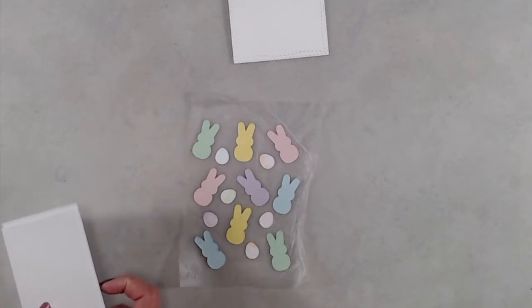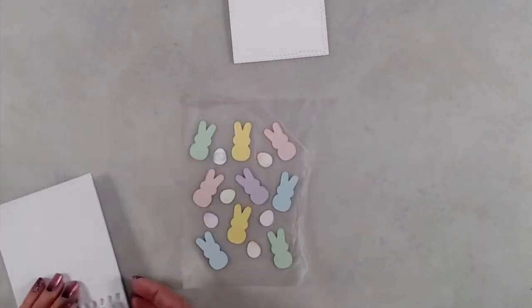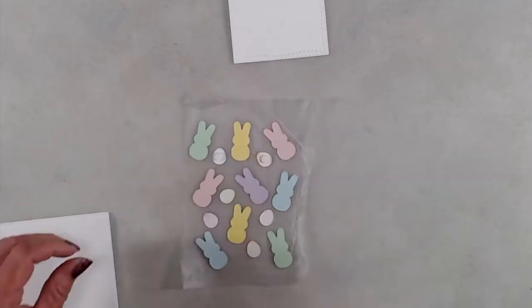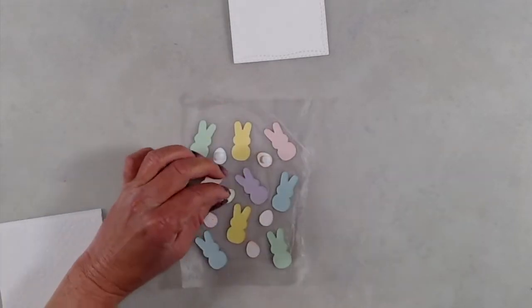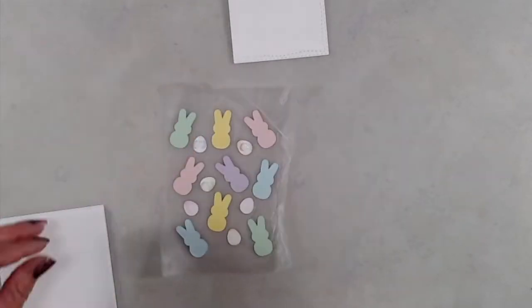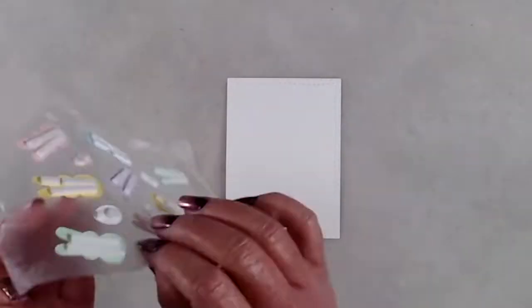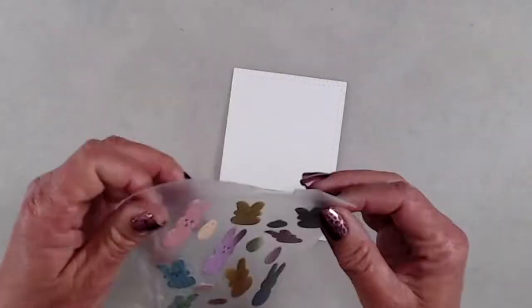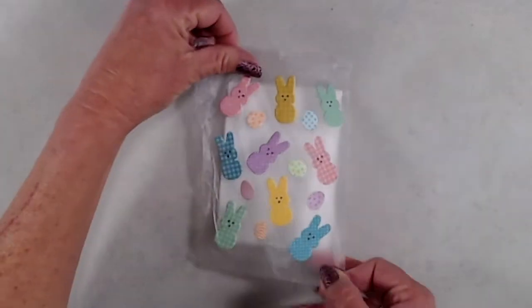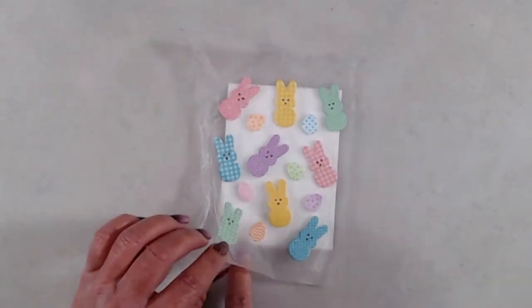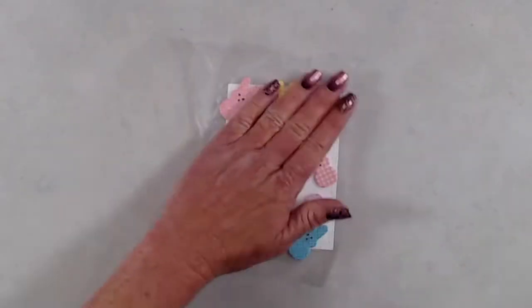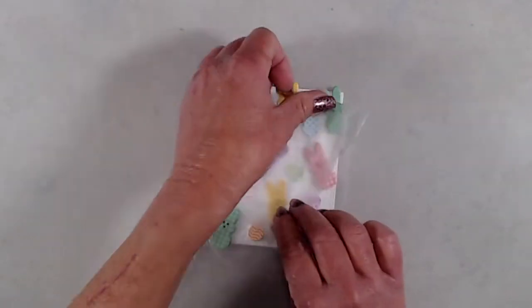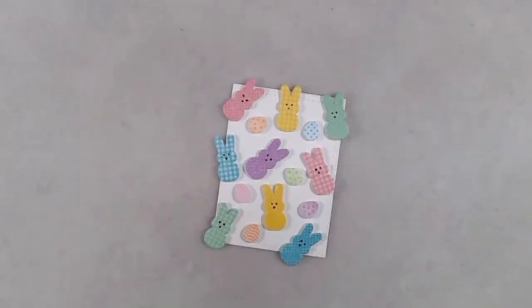I added some foam circles and sticky foam strips to the back of my elements, and once I had all that release paper removed, I very carefully laid that back on top of the white cardstock, pressed it down to make sure that they all stuck to the white cardstock, and then very carefully removed the press and seal wrap.